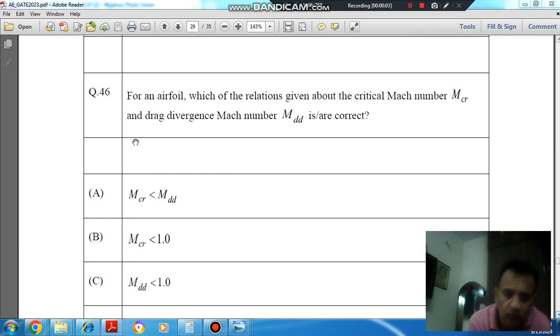Hello, welcome again. We are solving the 2023 aerospace engineering paper. Question number 46 is: For an airfoil, which of the relations given about the critical Mach number MCR and drag divergence Mach number MDD is correct?